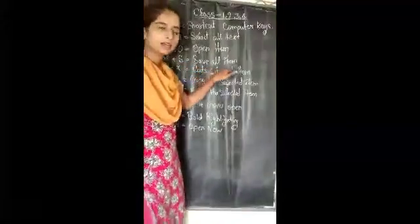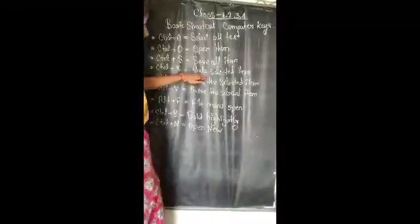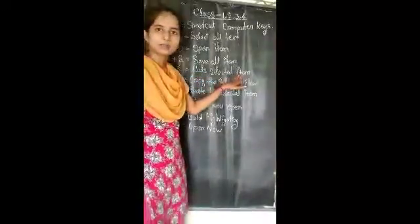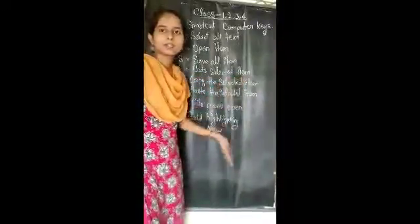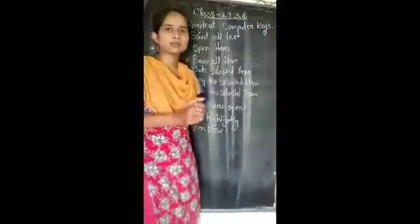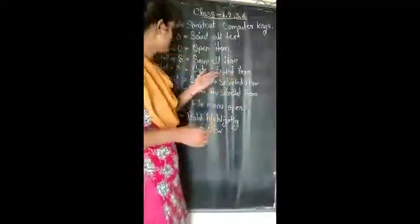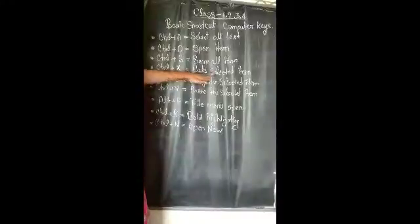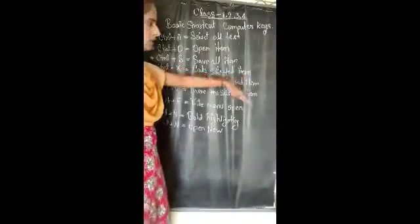We press Ctrl plus X for cut selected item. Fourth, Ctrl plus X. We press Ctrl plus X to cut the selected item. We select any item, then press Ctrl plus X to cut it.